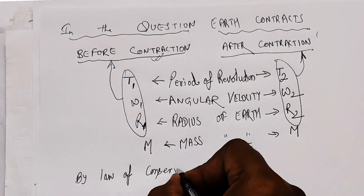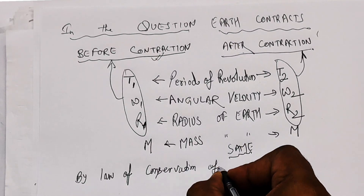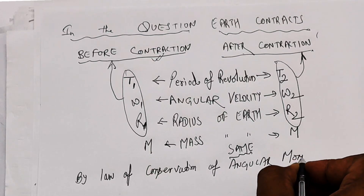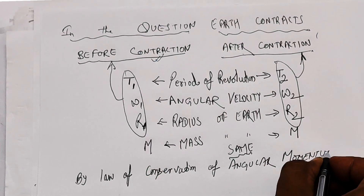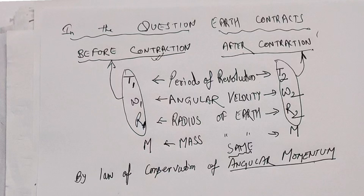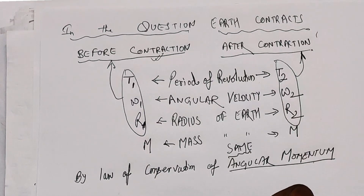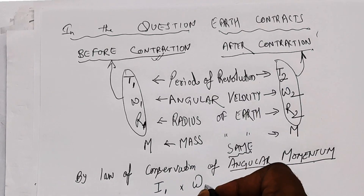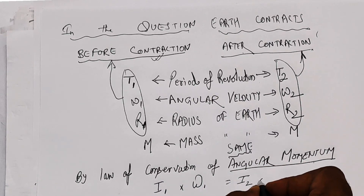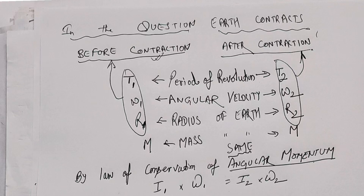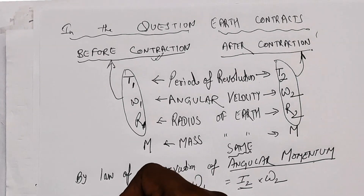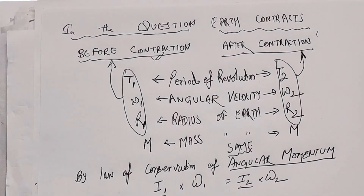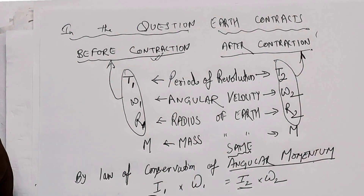By the law of conservation of angular momentum, we know that the product of I and omega is always constant, where I is the moment of inertia of that particular body and omega is the angular velocity of that body. Here, I is the moment of inertia of the earth given as 2/5 MR², where M is the mass, and mass is constant before and after contraction.